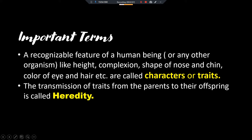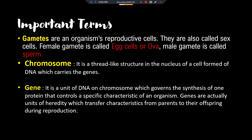Now the next term: gametes. Gametes are the reproductive cells of an organism. They are also known as sex cells. The female gamete is called an egg cell or ovum, and the male gamete is called sperm. As in the reproduction chapter, the female gamete — ovum — is produced by the ovary, and the male gamete — sperm — is produced by the testes.